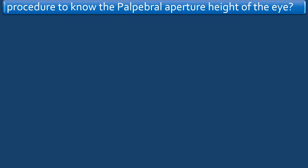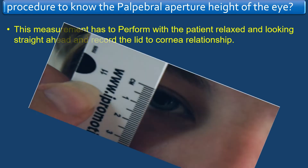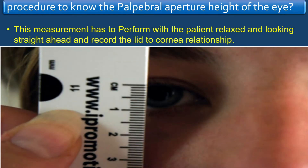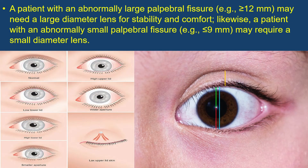This measurement has to be performed with the patient relaxed and looking straight ahead, and record the lid-to-corneal relationship. A patient with an abnormally large palpebral fissure — for example, equal to or more than 12 mm — may need a large diameter lens for stability and comfort.